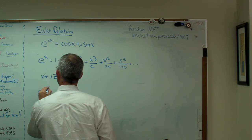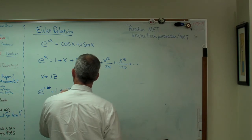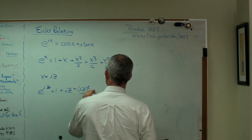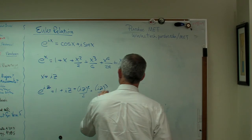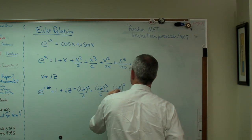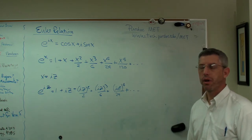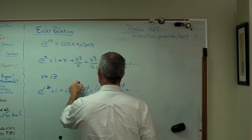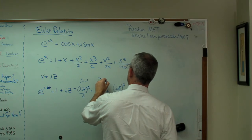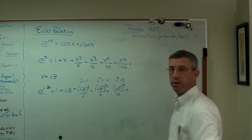Let's see. e to the iz equals 1 plus iz plus iz squared over 2 plus iz to the 3rd over 6, iz to the 4th over 24, and so on. So far so good. Well, what's i squared? i squared is minus 1, i cubed is minus i, i to the 4th is 1, and so on.